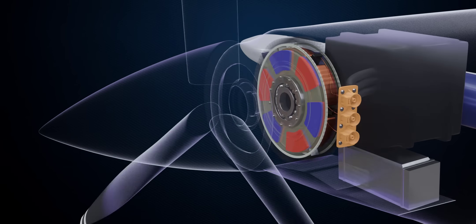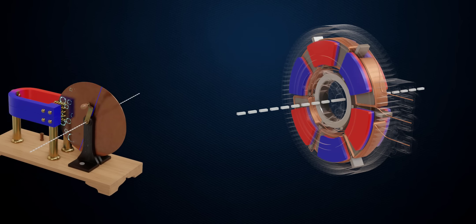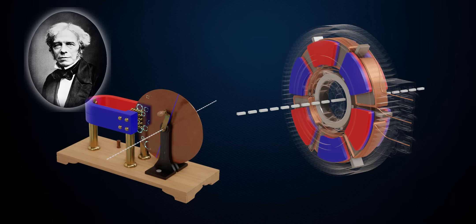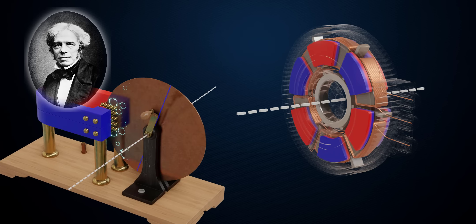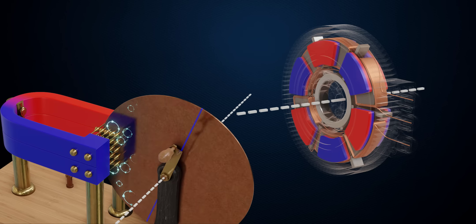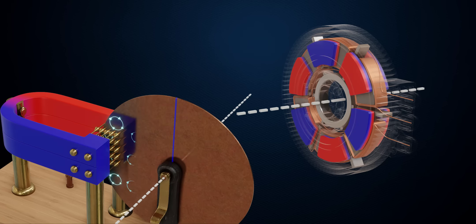Interestingly, the first-ever electrical generator developed by the genius Michael Faraday was an axial flux type. You can see the axis of rotation is parallel to flux lines. However, it never got its day in the sun back then.